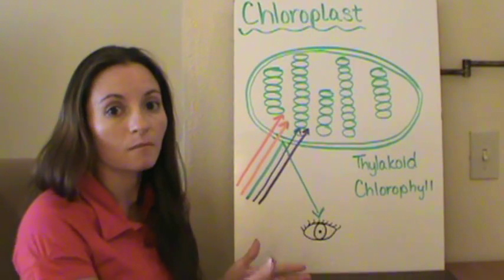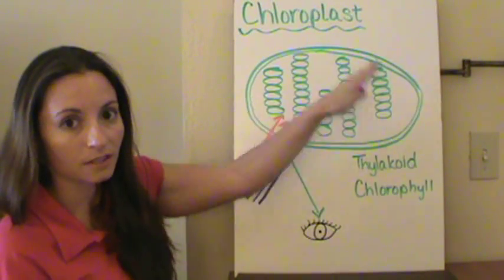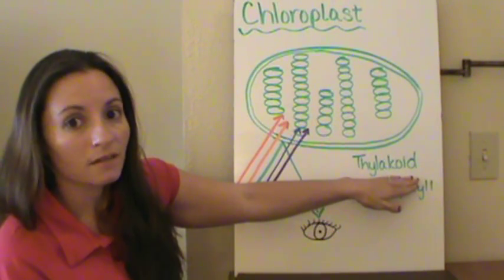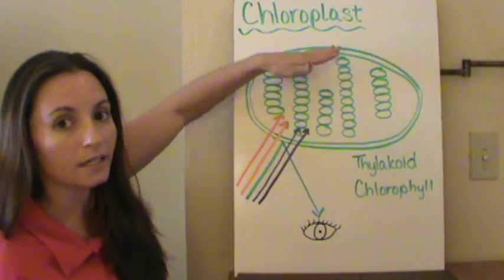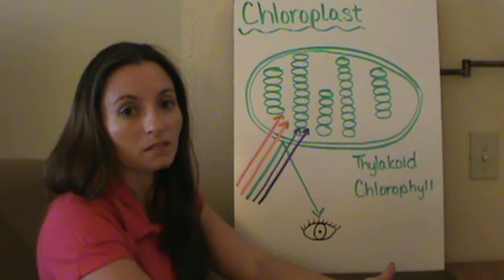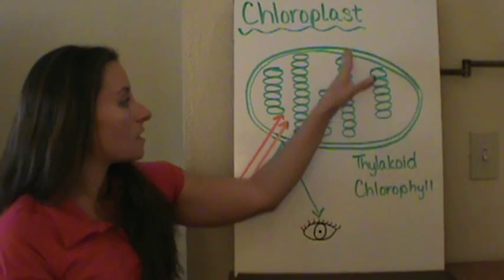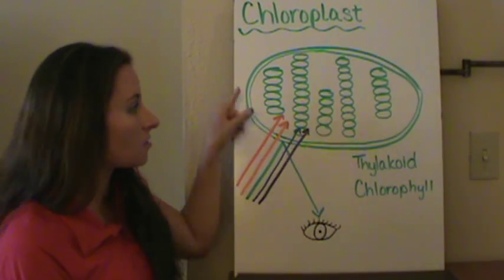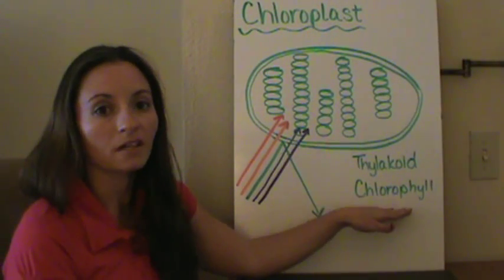We're looking mostly at plant cells. We have a chloroplast here, and you've probably seen this before. We also have something called a thylakoid. The thylakoids are these disc shapes in here and those actually help to carry out photosynthesis. You need to be able to identify the thylakoids, which are the disc shapes, and the chloroplast, which is the entire structure.